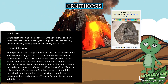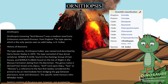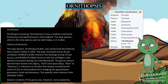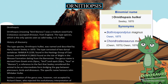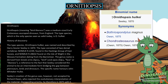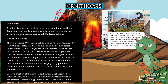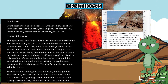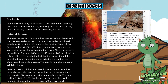The type species, Ornithopsis hulcae, was named and described by Harry Govier Seeley in 1870. The type consisted of two dorsal vertebrae: NHMUK 2239, found in the Hastings Group of East Sussex, and NHMUK 28632, found on the Isle of Wight in the Wessex Formation, dating from the Barremian.